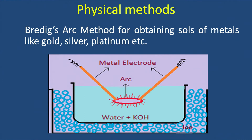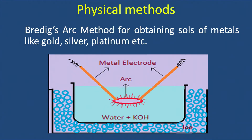In the Bredig's arc method apparatus, there is an outer tank containing ice, an inner tank containing water with an electrolyte like potassium hydroxide, and two rods of the metal whose colloidal sol we want to prepare. These rods are connected to a very high potential source so that an arc is struck between them. The arc temperature is so high that the metal vaporizes; these vapors condense in the water to form the sol. Potassium hydroxide stabilizes the sol, and ice is required because a lot of heat is generated.